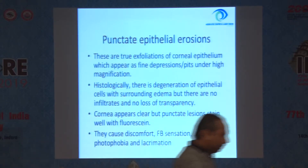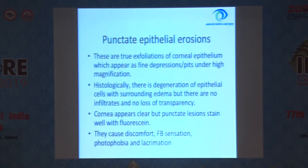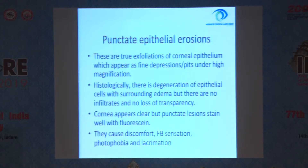Punctate epithelial erosions are true exfoliations of corneal epithelium which appear as fine depressions and pits under high magnification. Histologically, there is a degeneration of epithelial cells with surrounding edema, but there are no infiltrates and there is no loss of transparency. Cornea appears clear but punctate lesions stain well with fluorescein.